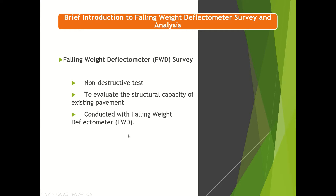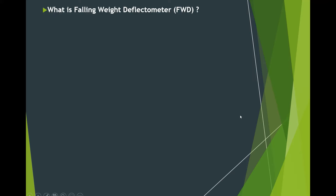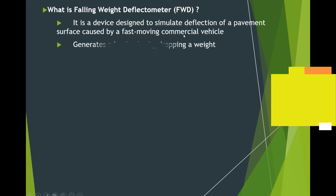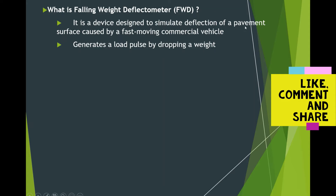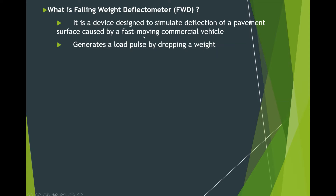The FWD is conducted with the FWD instrument, which is very costly. Falling Weight Deflectometer is a device used to simulate deflections caused by a fast-moving vehicle on a pavement surface. To simulate deflection, we use a load pulse. The load pulse is created by dropping a weight onto the road surface, and that creates a load pulse which in turn creates a deflection.